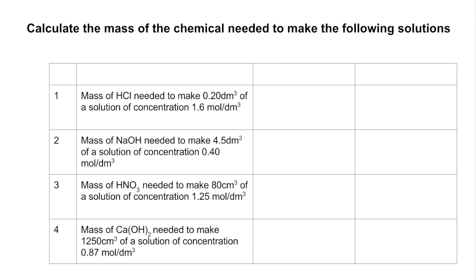The last set of questions is a little different: we need to calculate the mass of chemical required to make given solutions. We're told the chemical, the volume, and the required concentration. First, use moles = concentration × volume to find the moles needed. Then use mass = moles × Mr to find the required mass.